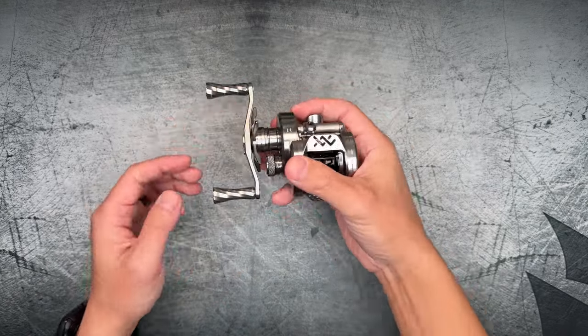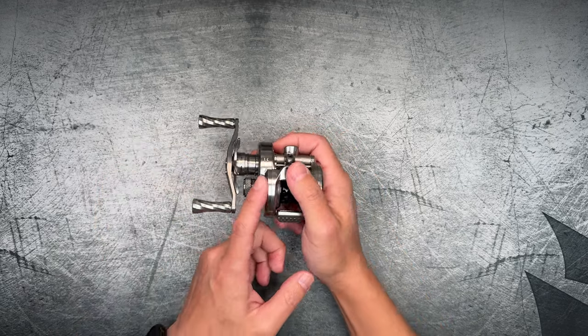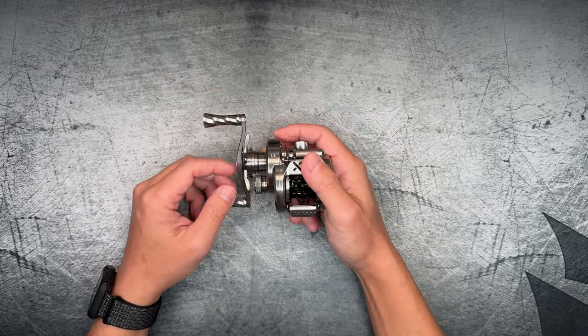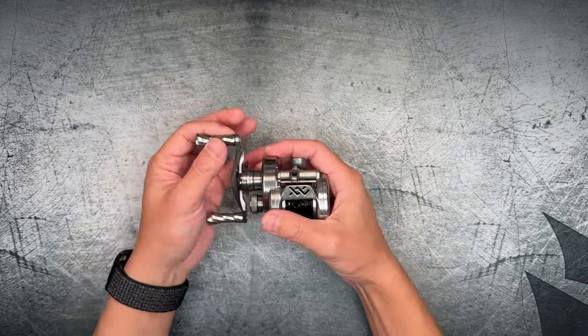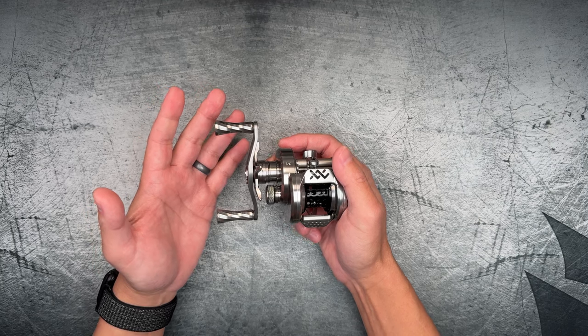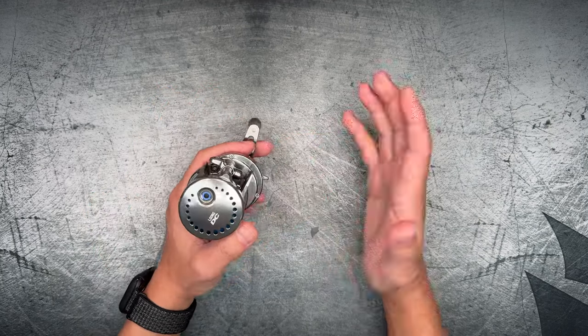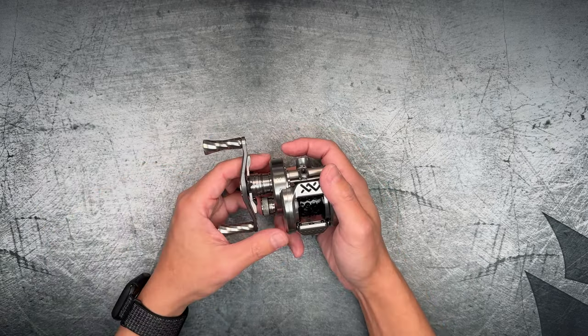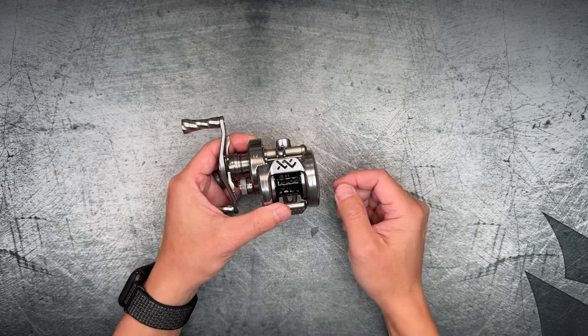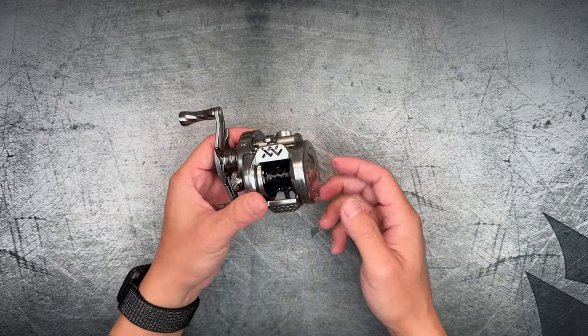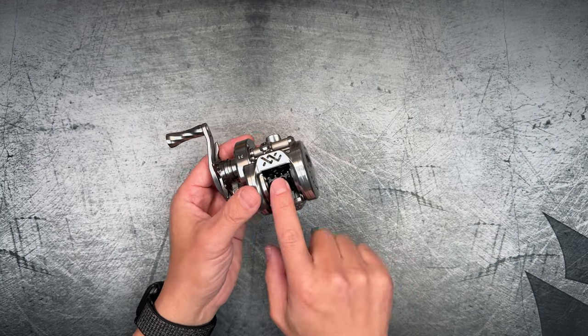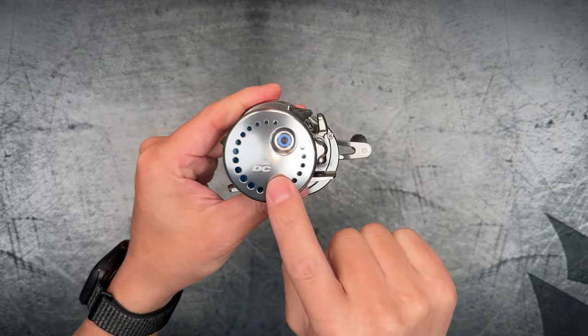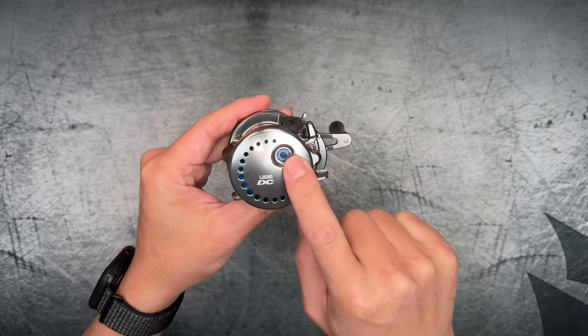But this is it guys - this is the actual DC reel itself. Let's set this carrying case aside. Very nice that they give you that; it would have been nice to see the other reel also have that as well. On initial use or initial retrieve, I feel like this reel is actually smoother than the non-DC version. I'm not really sure why - it could be variance between reel to reel. But this actually uses the same exact body as the non-DC Air Light. The only differences you'll see are the spool and the side plate itself.